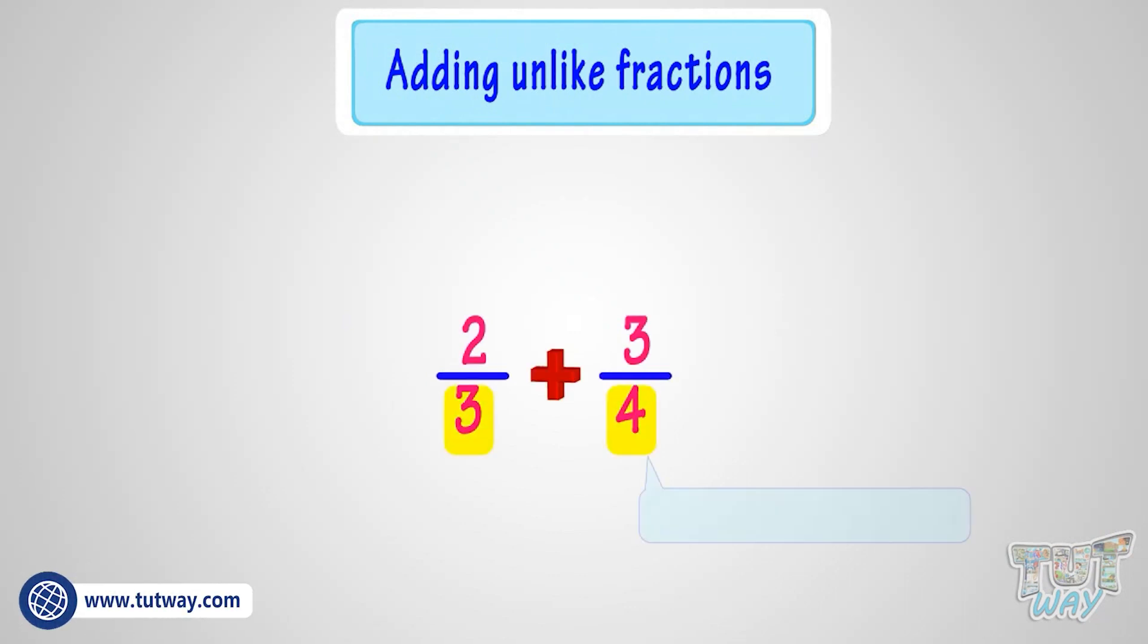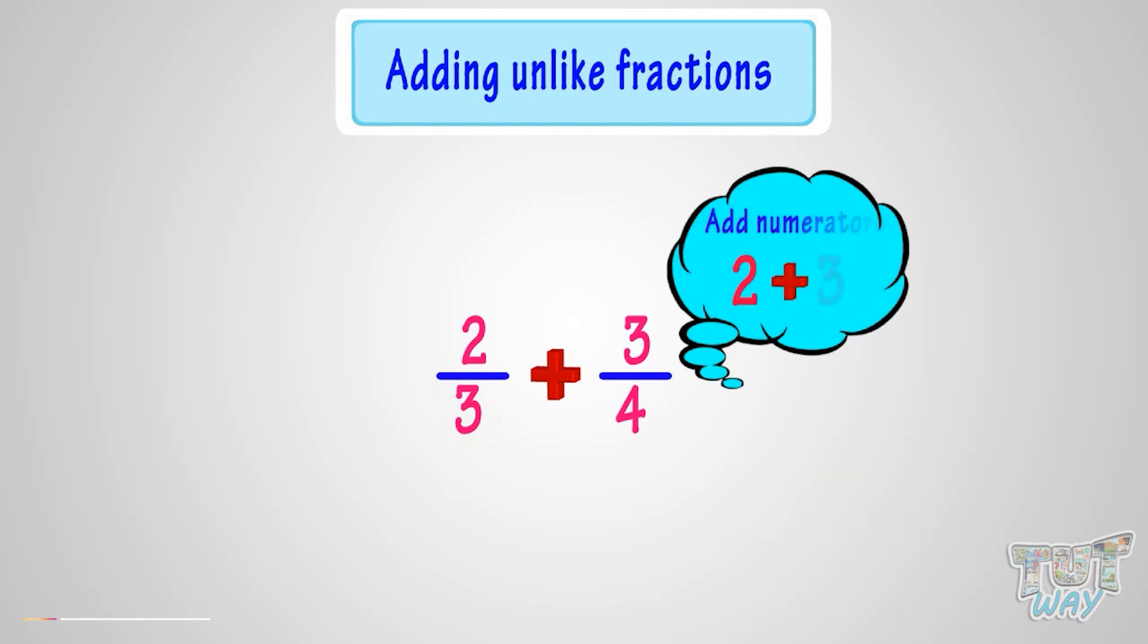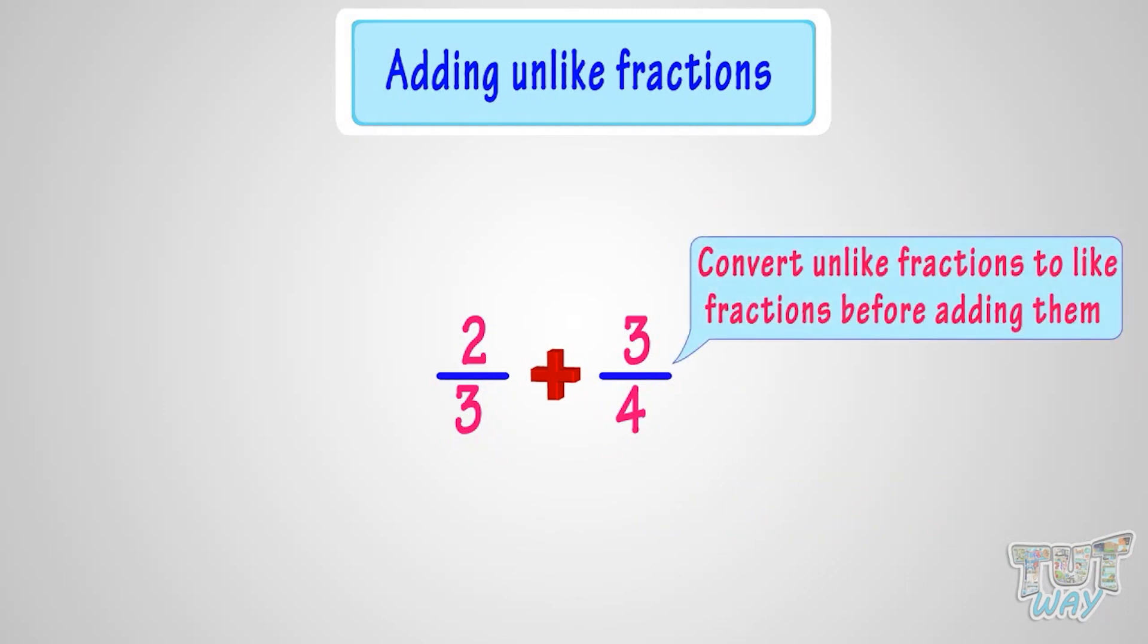Their denominators are different, so we can't add them directly, that is by just adding their numerators. For adding unlike fractions, first we have to convert them to like fractions, that is we have to make their denominators same, and then we add them like like fractions.